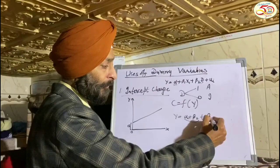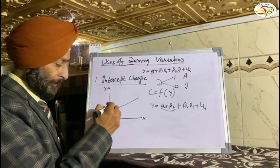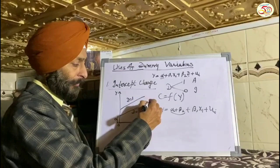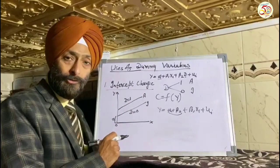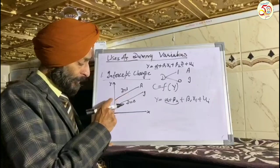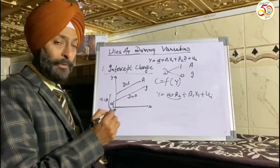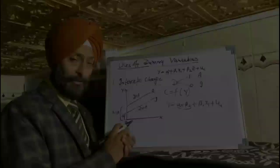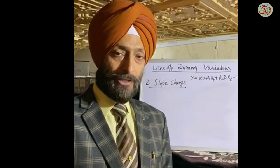If we plot this new model, we get a new consumption function shifted upward. When D = 1, this represents the American consumer's consumption function, and when D = 0, this is the Indian consumer's consumption function. So with the change in the value of D, the intercept value has changed from α to α + β₂. This is the first important use of dummy variable: to present change in intercept value.